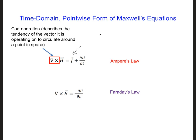Another way we can get a circulating magnetic field is if there is a time-changing D field at the spatial position of interest, electric flux density.